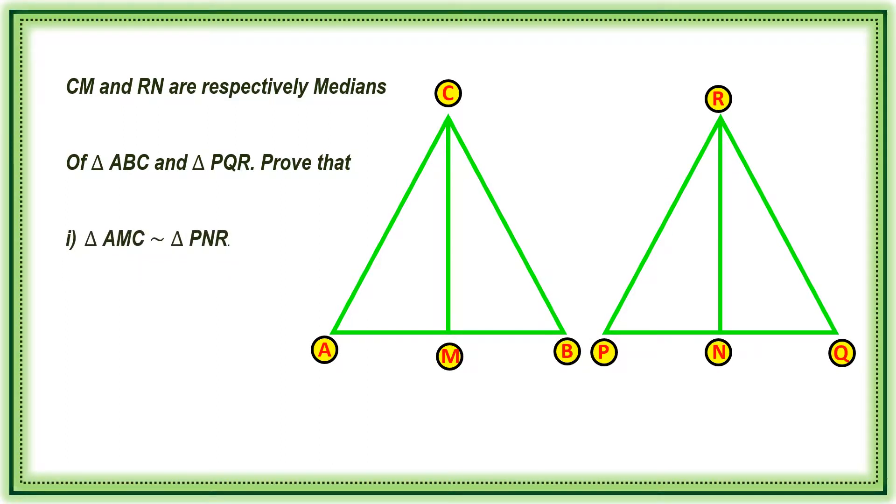triangle AMC similar to triangle PNR. Second one, CM by RN is equal to AB by PQ. Third one, triangle CMB similar to triangle RNQ.